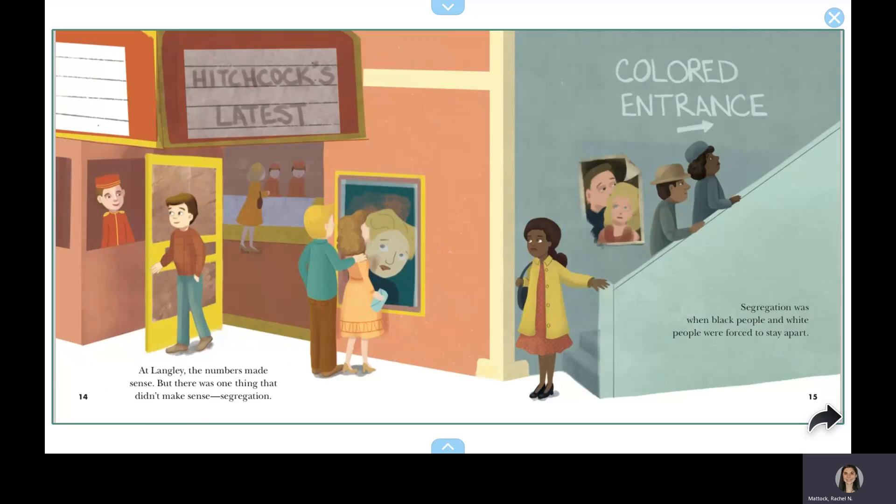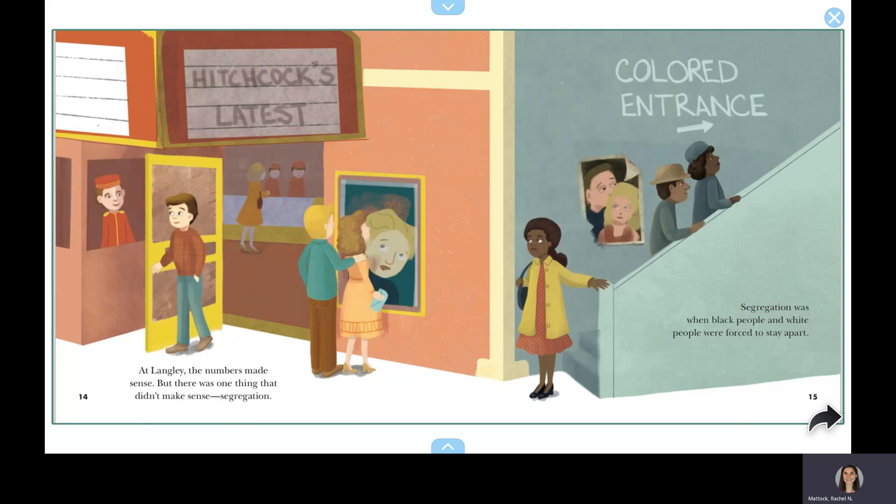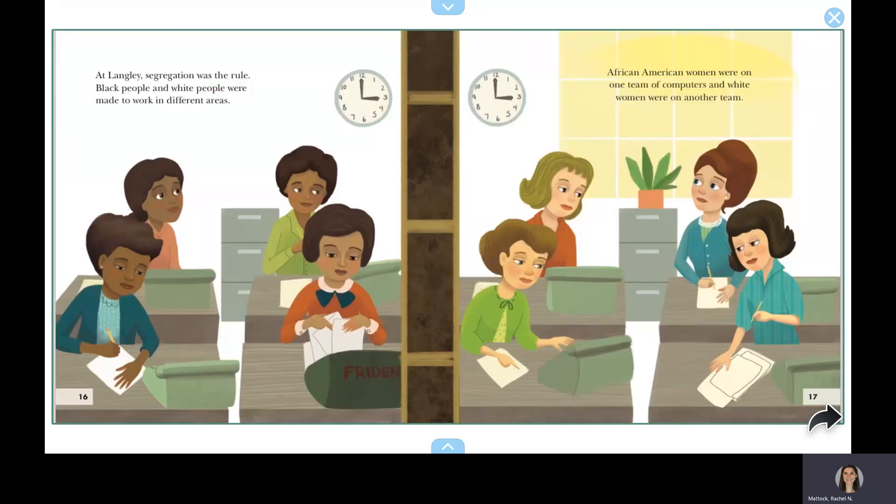At Langley, the numbers made sense, but there was one thing that didn't make sense. Segregation. Segregation was when black people and white people were forced to stay apart. At Langley, segregation was the rule. Black people and white people were made to work in different areas. African American women were on one team of computers, and white women were on another team.